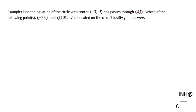Welcome, or welcome back. In this example we need to find the equation of the circle with center at negative 3 and negative 5, passing through 2 and 1. Then we need to find which of the following two points are located on the circle. I'm going to start with the first part.